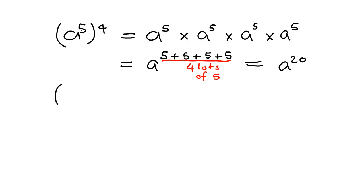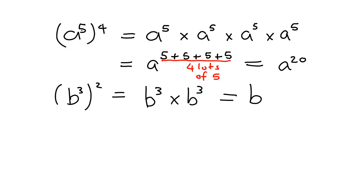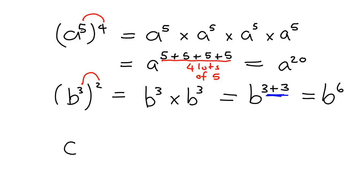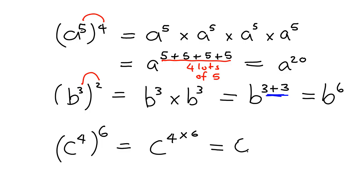Let's look at another example: b cubed squared. That means b cubed multiplied by b cubed, which is b to the 3 plus 3 — in other words, 2 lots of 3 — so you get b to the 6. Can you see the shortcut? You simply multiply the exponents: 5 times 4 in the first case, and 3 times 2 in this case. So quickly, if you had c to the power of 4 raised to the power of 6, the answer is c to the power of 4 times 6, which is c to the 24.